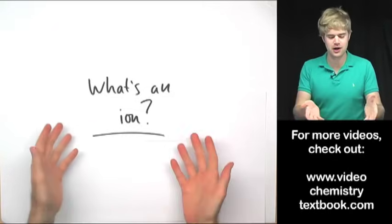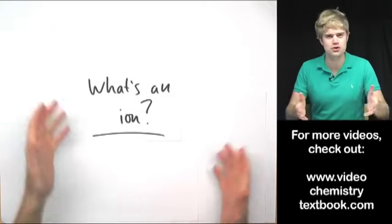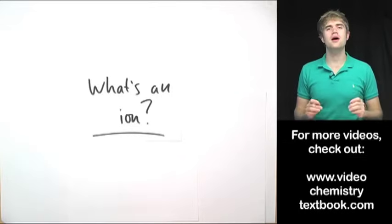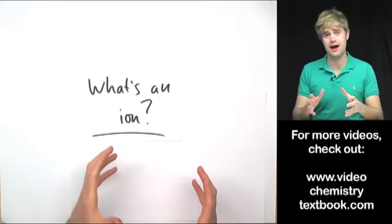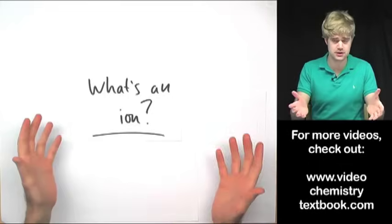Okay, what's an ion? People talk about ions all the time in chemistry, so what are they? Well, an ion is an atom or a group of atoms that have an electrical charge. That's all it is.